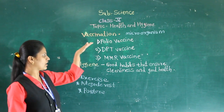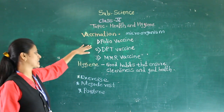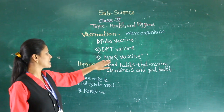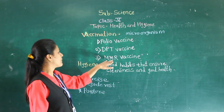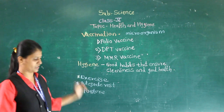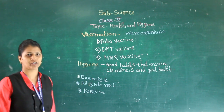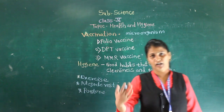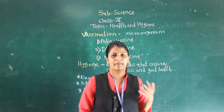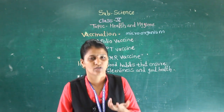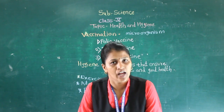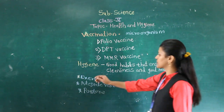There are different types of vaccinations: Polio vaccination, DPT — which stands for Diphtheria, Pertussis, and Tetanus — and MMR, which stands for Measles, Mumps, and Rubella vaccination. These are the different types of vaccinations. To prevent communicable diseases, vaccination alone is not enough. Hygiene is very important.